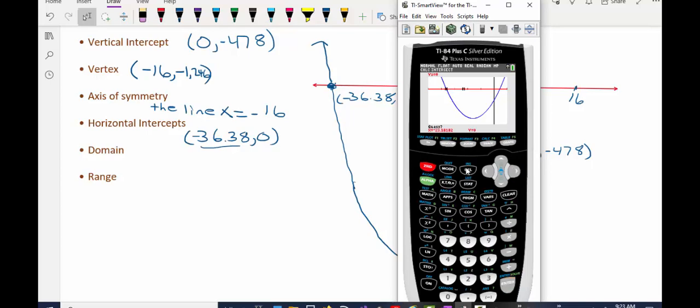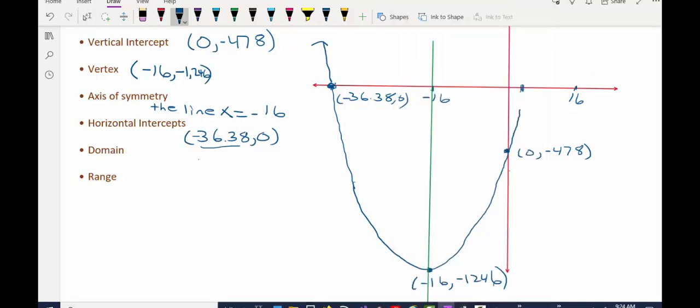If you're impatient, you can press second right, and it'll pop a little faster. Now that my guess is closer to the rightmost intercept, I'll press enter. And it tells me that the rightmost horizontal intercept has an x value of roughly 4.38. So now I know 4.38 is another x value that makes the y value 0 in this equation.